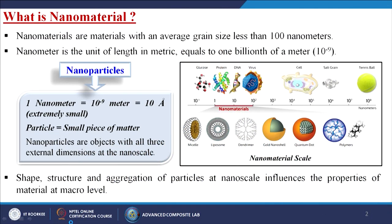Shape, structure, and aggregations of particles at the nanoscale influence the properties of materials at the macro level. Looking at a scale image, nanomaterials fall in the range of 1 to 100 nanometers. Generally, micellar, liposome, dendrimer, gold nanoshells, quantum dots, polymers, and chains all fall within this nanomaterial scale. For comparison, 10 to the power 8 nanometers is roughly the size of a tennis ball. The entire range of nanomaterials lies within 1 to 100 nanometers.